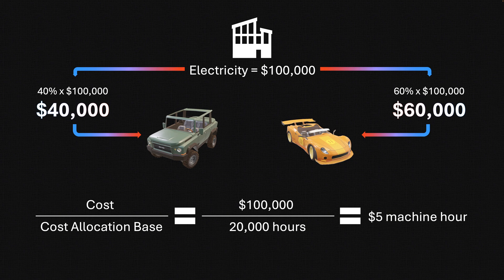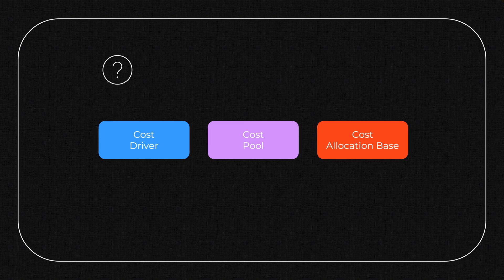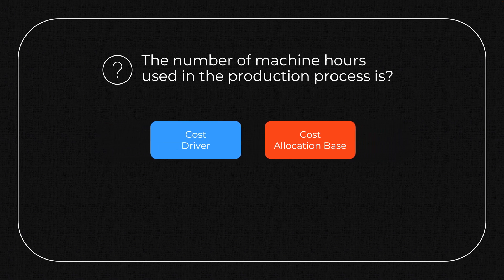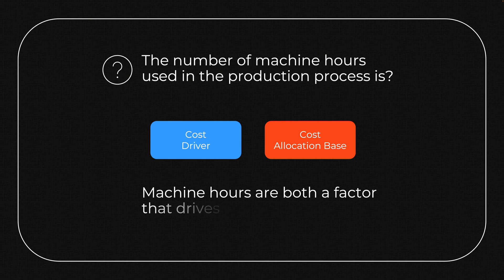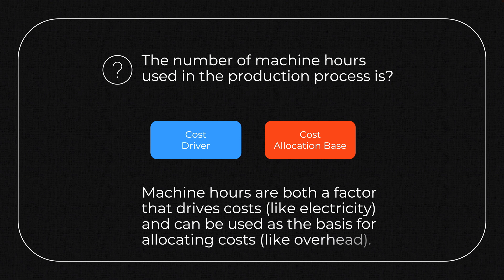So we've used cost allocation base before, and now it's game time. I'll ask you two questions — for each, answer whether we are talking about a cost driver, a cost pool, or a cost allocation base. There can be more than one correct answer. Question one: the number of machine hours used in the production process is... The answer is both cost driver and cost allocation base. Machine hours are a factor that drives costs like electricity, and they can also be used as the basis for allocating costs like overhead or rent.